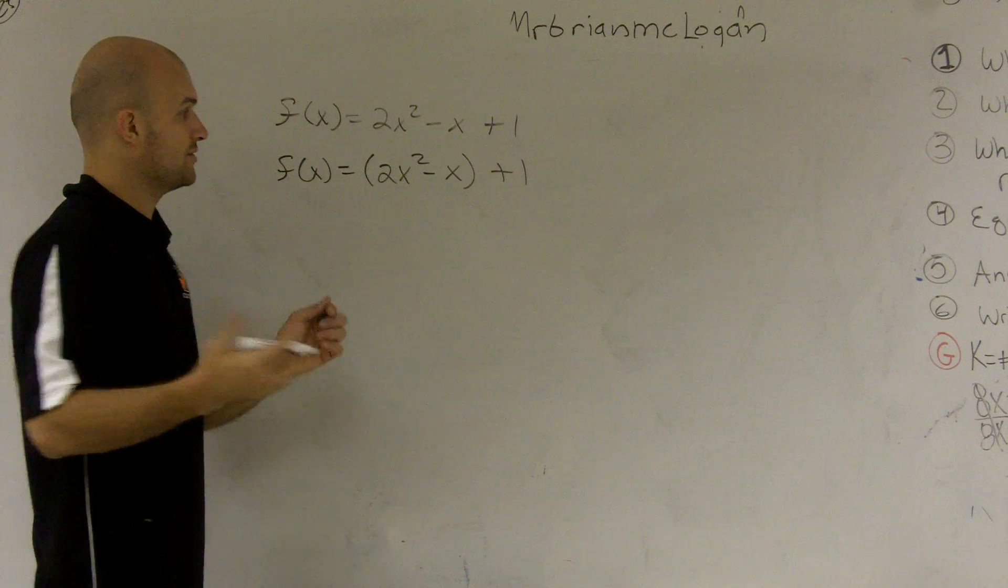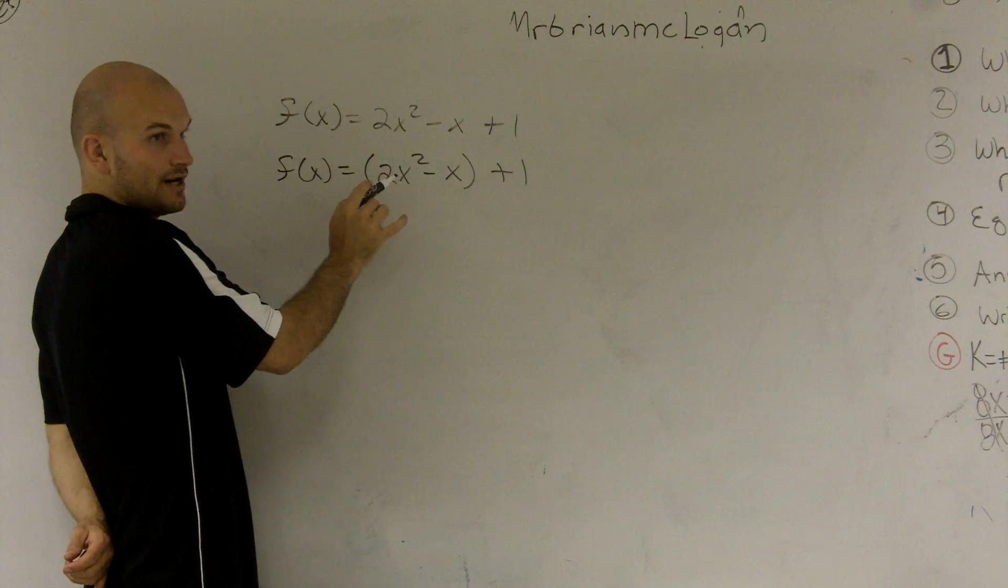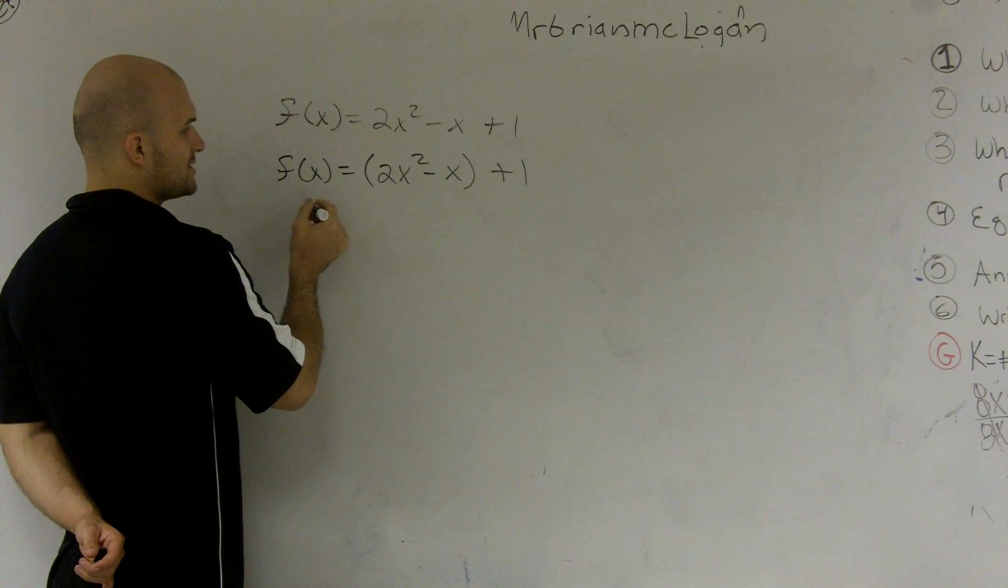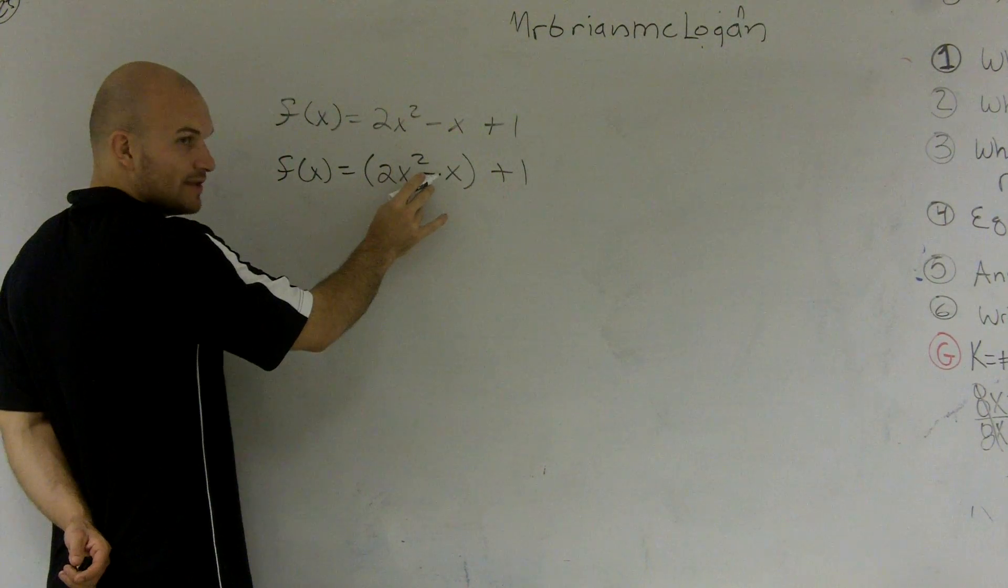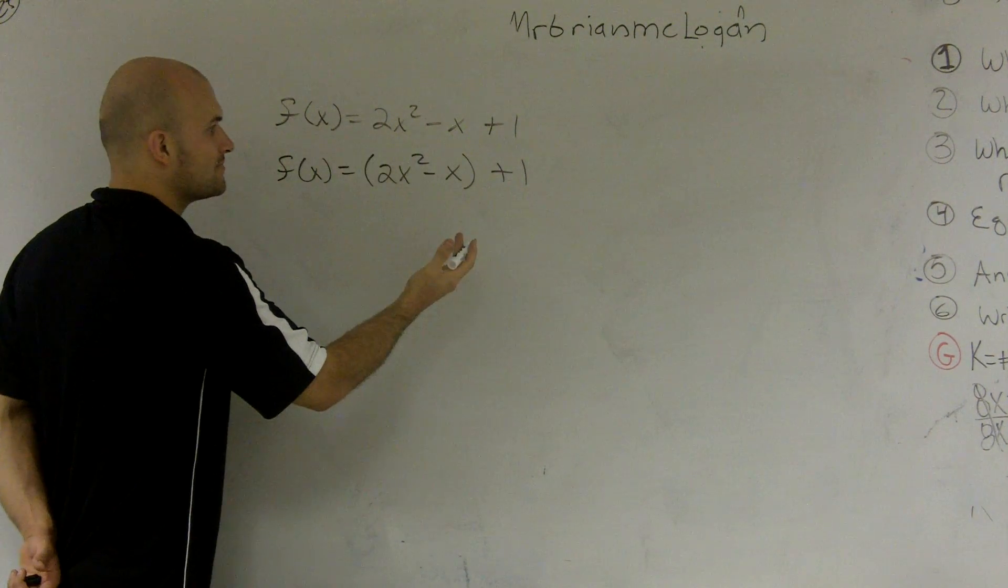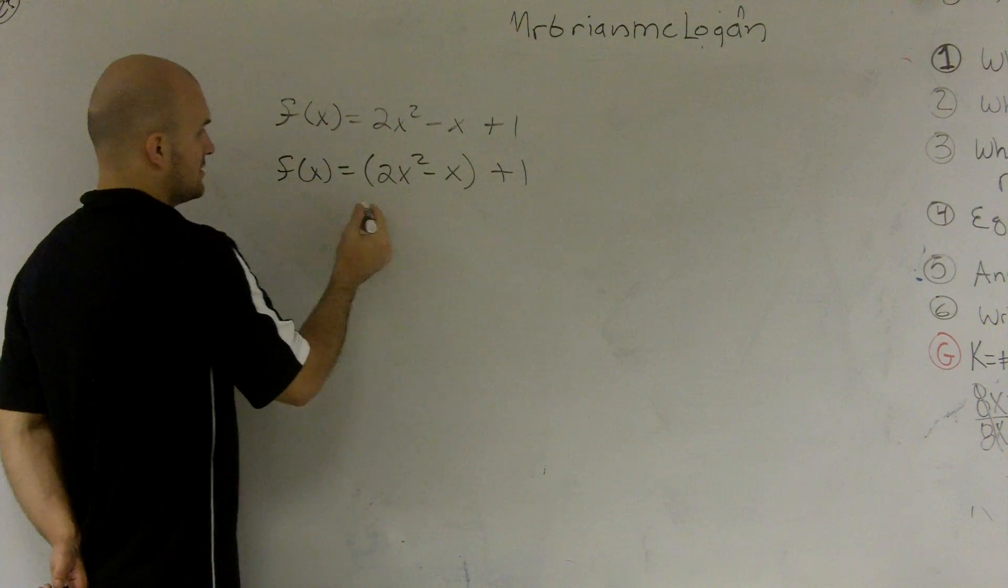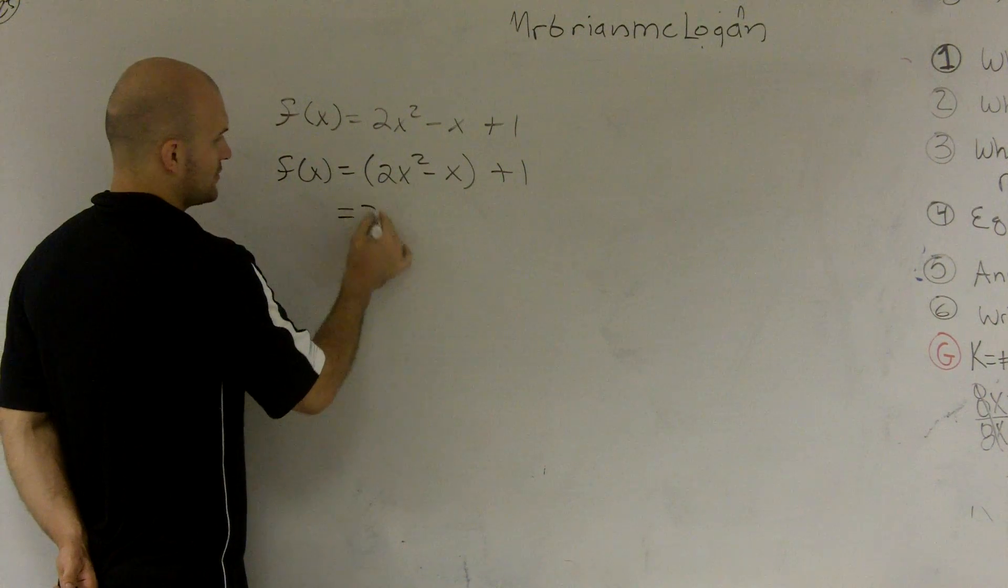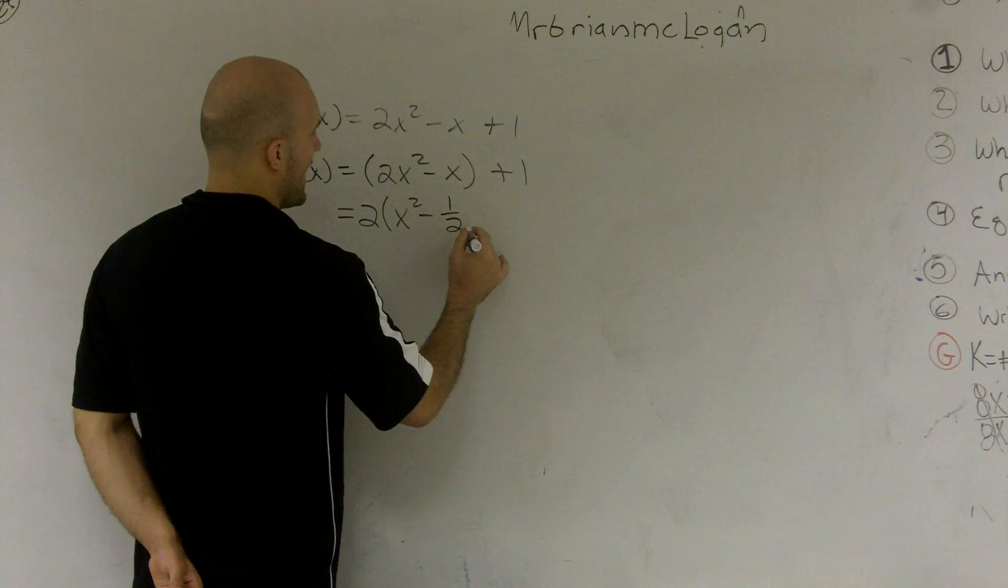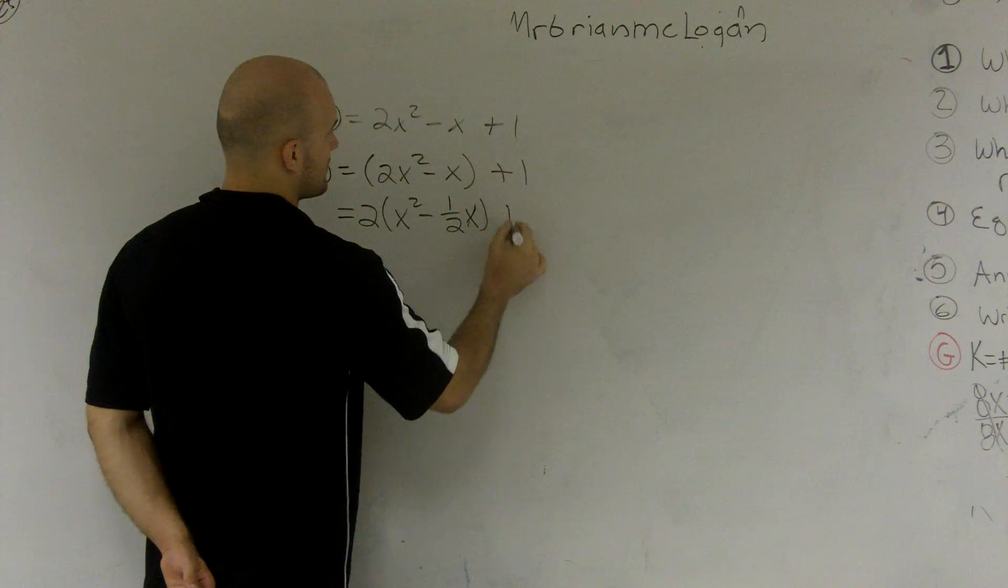The next thing I need to do is, remember I told you you cannot have anything in front of that x squared. You've got to get everything out of there. So I'm going to factor out the 2. Now, this doesn't have a 2 in there, this has a 1. So if I'm going to factor out a 2, that's kind of like dividing out a 2. So what this is going to look like, it's going to look a little crazy.